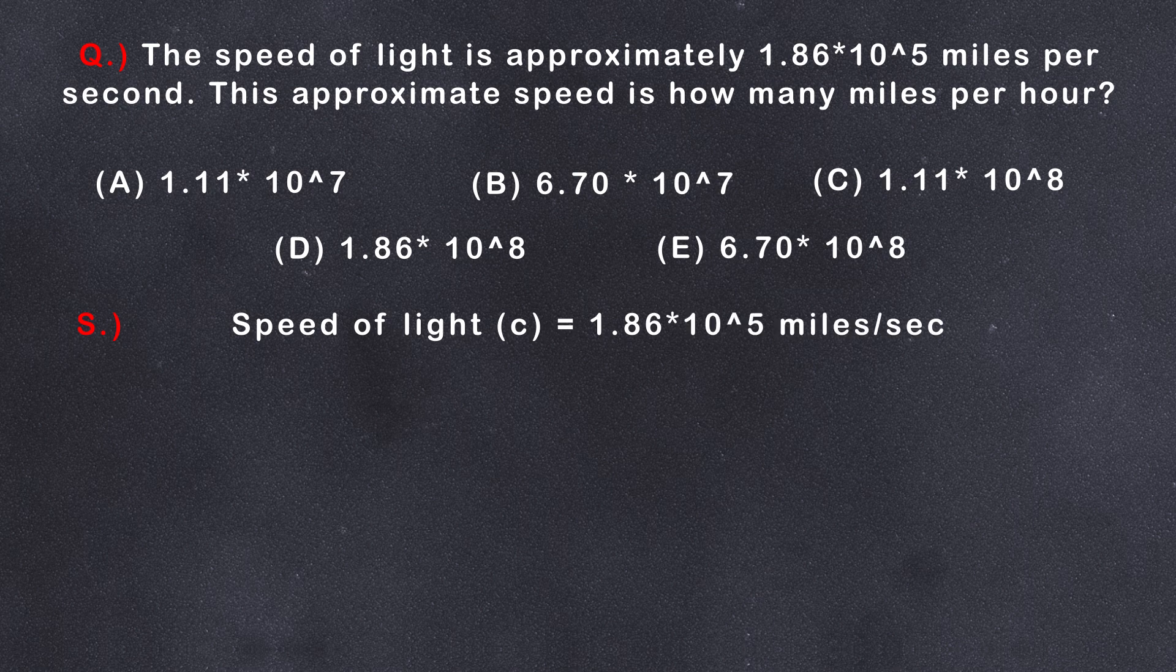The speed of light can be written as 1.86 × 10^5 miles per second. Now, we need to convert seconds into hours. We know that 3,600 seconds = 1 hour or 1 second = 1/3,600 hours.